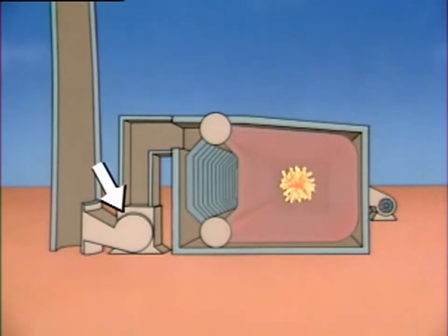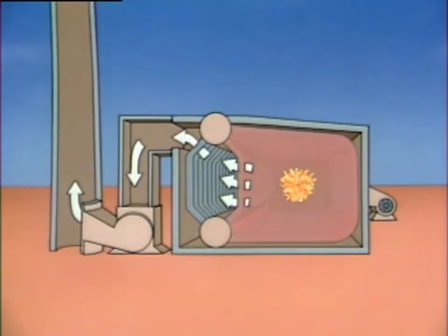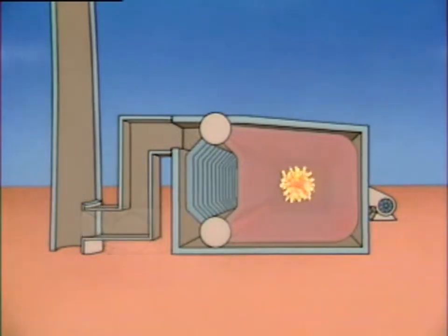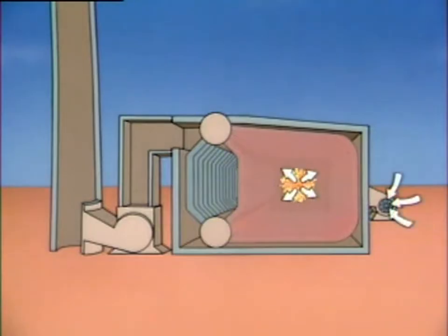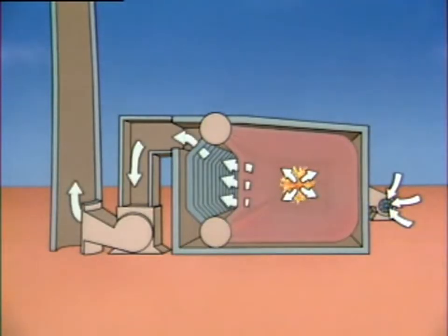Induced draft fans create draft by drawing combustion gases from the boiler. Many boilers operate with only a forced draft fan. However, some boilers need both types to provide the proper draft. For example, in this boiler, the forced draft fan supplies air to the burner, and then the induced draft fan draws out the hot combustion gases.